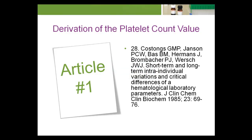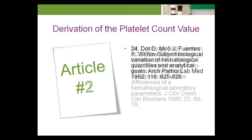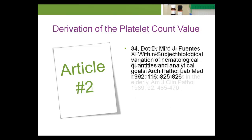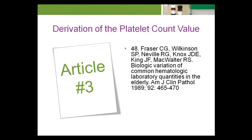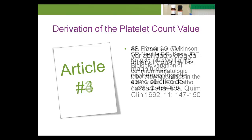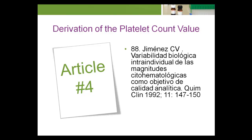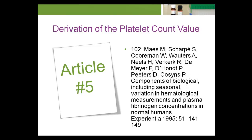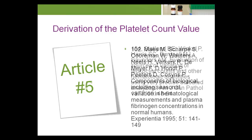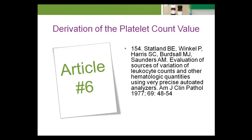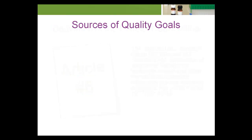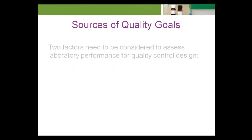Unlike many other approaches, quality specifications derived from biological variation have scientific references that they were computed from. Here are the six scientific articles that were used to derive the biological variation components for platelets. Once the quality specifications have been determined, the next step is to evaluate laboratory performance.